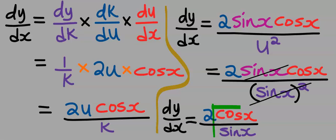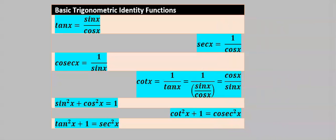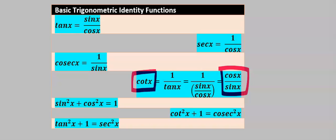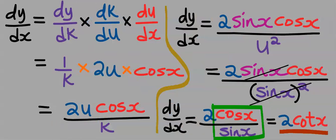However, cos(x) divided by sin(x) has a trigonometric identity. From the basic trigonometric identity functions, cos(x) divided by sin(x) is equal to cot(x). Always remember these identity functions. Hence 2·cot(x) becomes our dy/dx, and this is our answer.